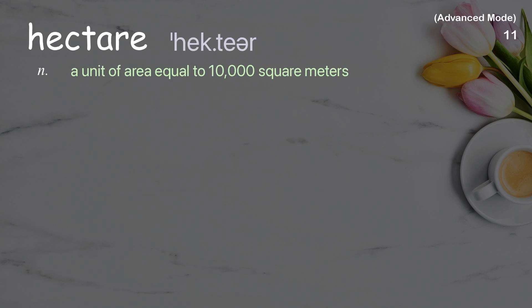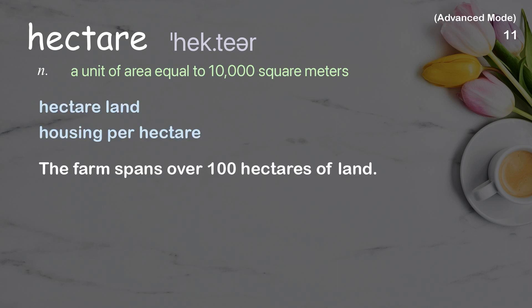Hectare: a unit of area equal to 10,000 square meters. Examples: hectare land, housing per hectare. The farm spans over 100 hectares of land.